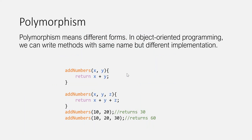Lastly, we have polymorphism. Polymorphism means different forms. In object-oriented programming, we can write methods with the same name but different implementations. For example, here we have two methods both named addNumbers. The first takes two parameters and returns their sum. The second takes three parameters and returns the sum of those three. When we call addNumbers with two arguments, it calls the first method; with three arguments, it calls the second. Same name but different forms — that's why it is called polymorphism.